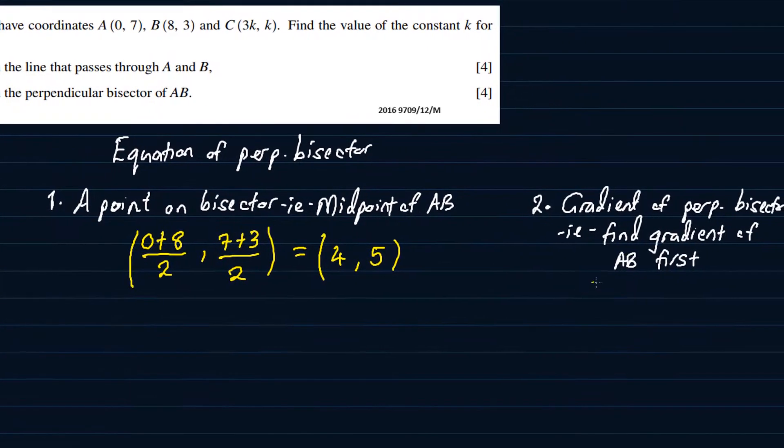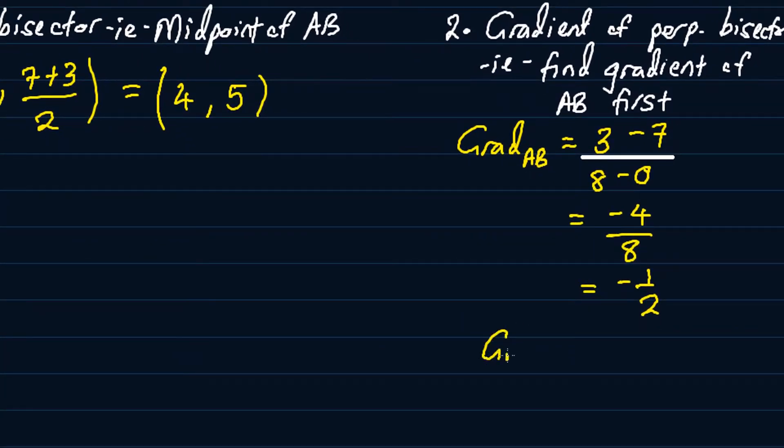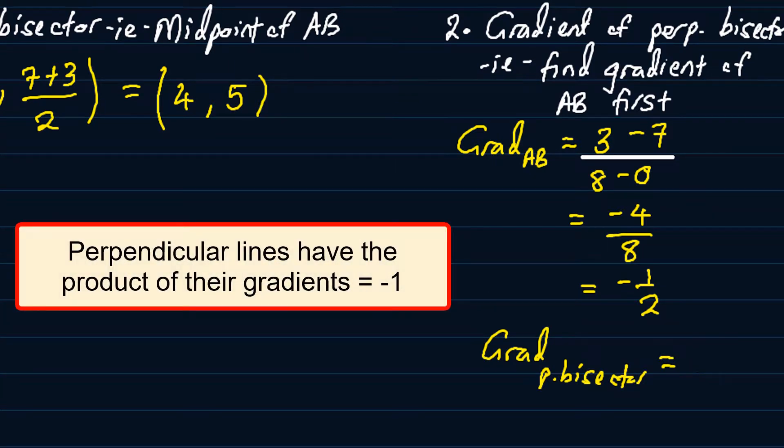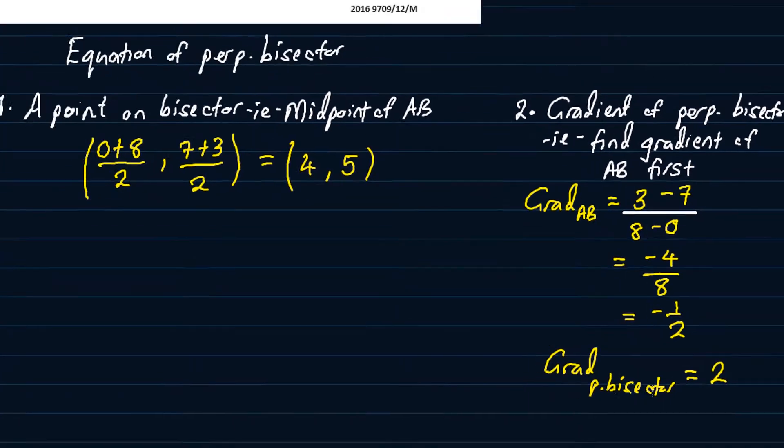Then for the gradient, let's start with the gradient of AB. Then using the two points, we will have 3 minus 7 divided by 8 minus 0. So this is going to give us minus 4 over 8. I'm sure we worked out something like this. So that's minus a half. So for the gradient of perpendicular bisector, it should simply be 2. Remember, the product of a line and its perpendicular bisector should give us minus 1. So the gradient of the perpendicular bisector should be 2.